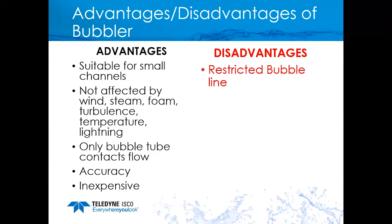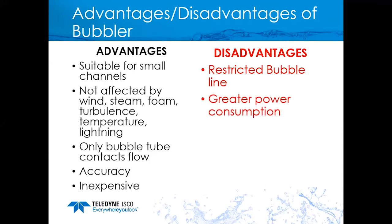Disadvantages of the bubbler include the potential for restricted bubble lines. If there's a lot of sediment or silt, it could plug the end of the line. ISCO flow meters have an automatic purge system to help clear restrictions, but sometimes maintenance is required — cleaning out debris or running a wire through the bubble line. Bubblers can also have greater power consumption, especially with long lines where the air pump turns on frequently due to excessive purging, potentially using more power than an ultrasonic sensor.